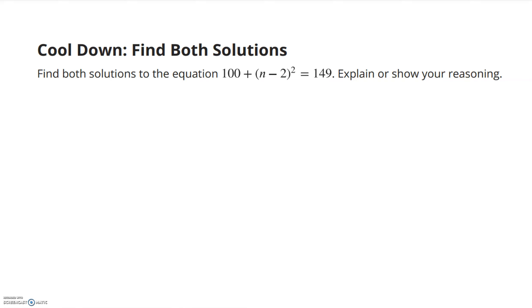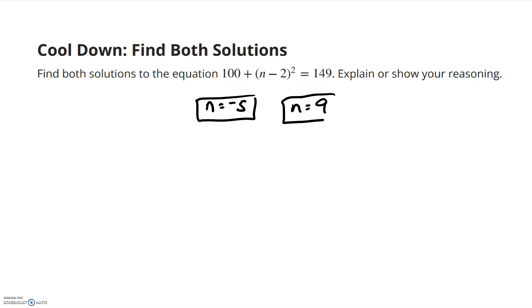The solutions you should get — if I remember correctly — are n is equal to negative 5, and n is equal to positive 9. Those should be the two solutions. Work those out, and when you're done, the 7.3 practice is in your OneNote right underneath this page. Thanks, guys.